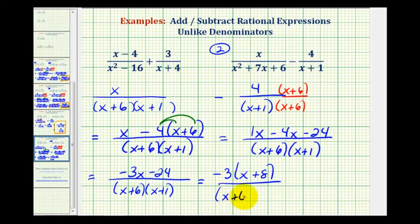Notice in factored form, we can see we do not have any common factors between the numerator and denominator, and therefore we know it's in simplest form. This would be our difference.